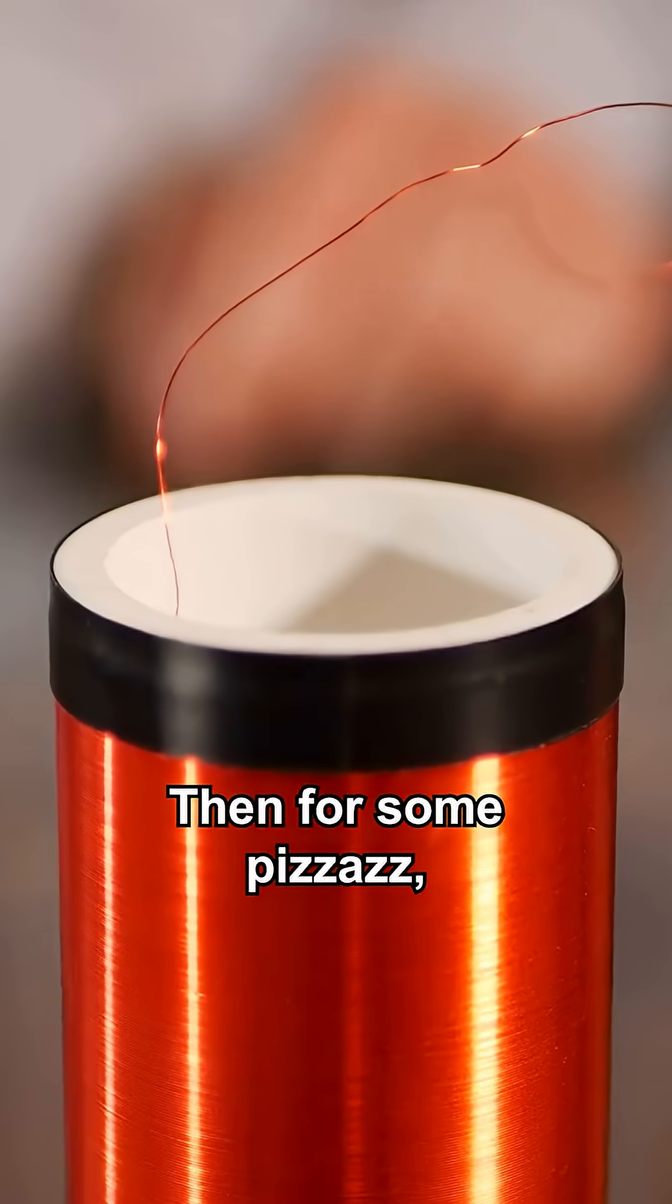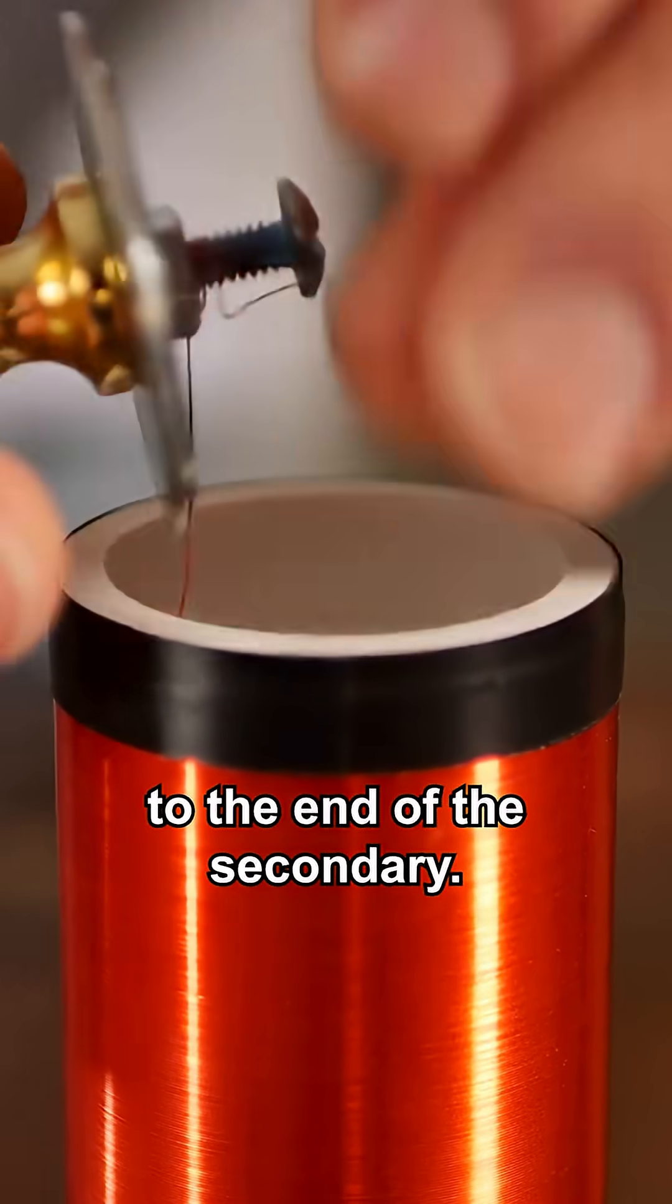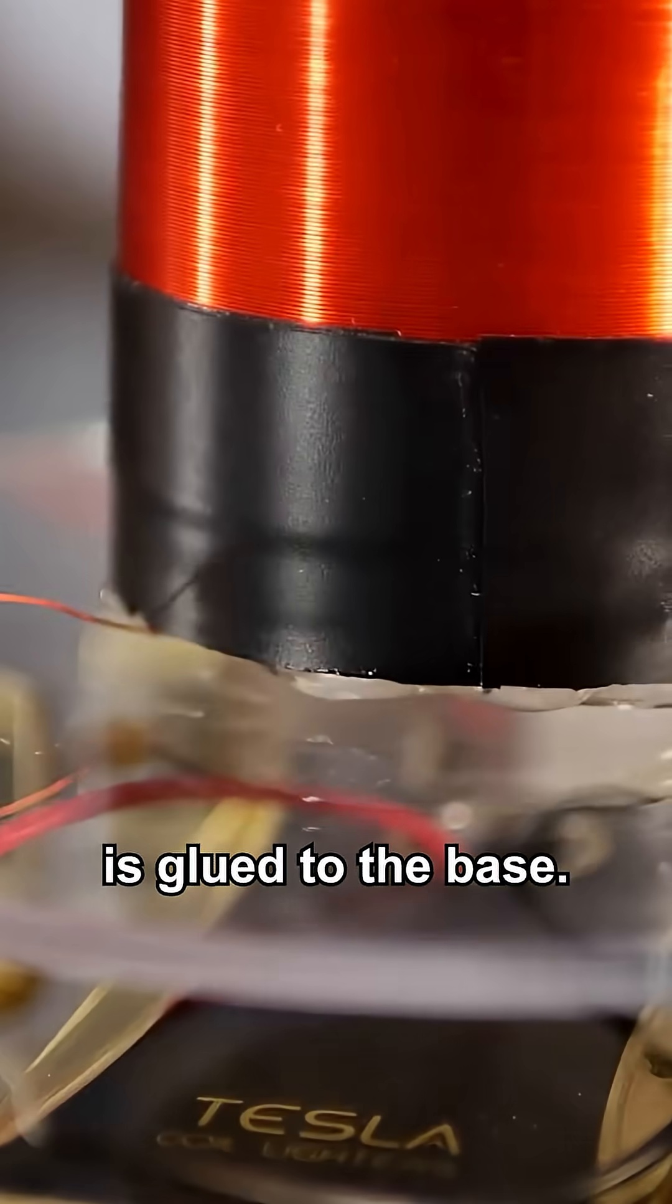Then for some pizzazz, a drawer knob and some washers are used as the top load, and then those are connected to the end of the secondary. It's glued to the top and then the secondary itself is glued to the base.